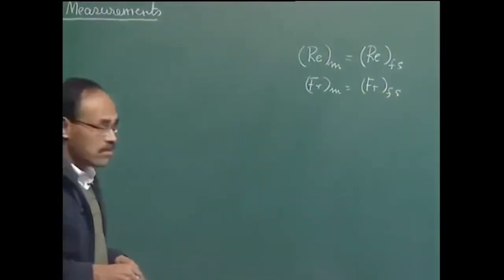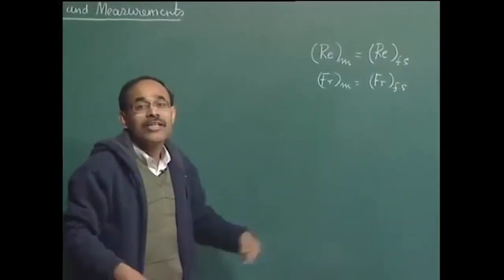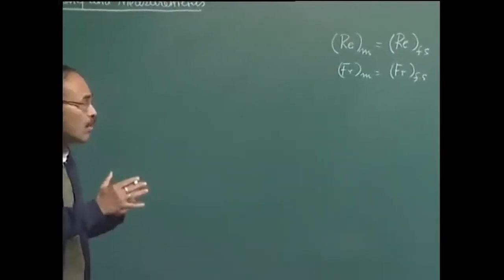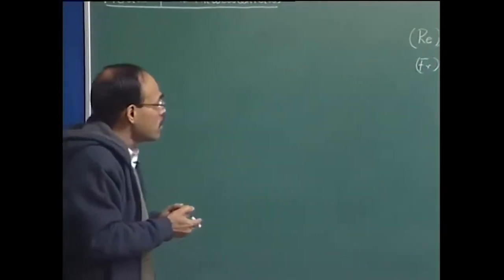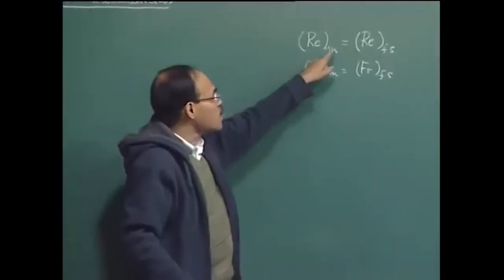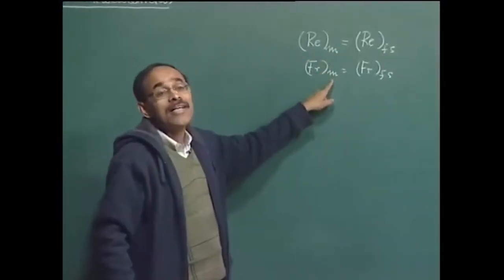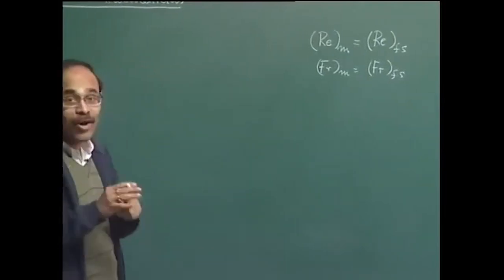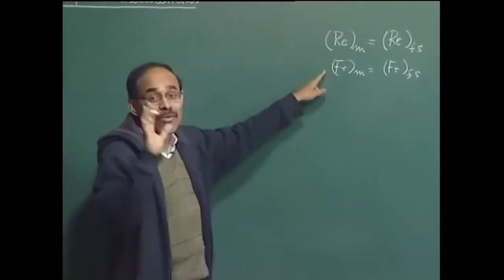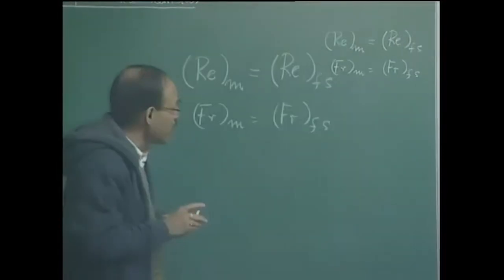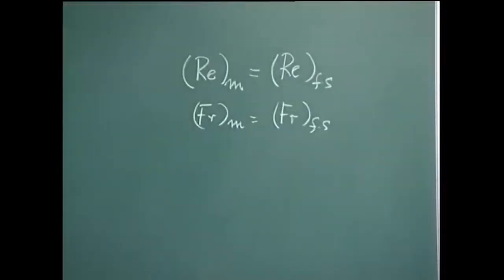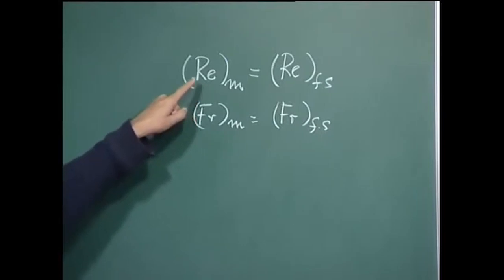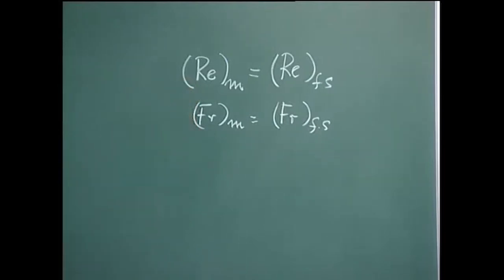If you can maintain these two equalities, additional numbers are going to follow if you have more forces, as I have already discussed. If you can maintain these two equalities, we can say the systems are dynamically similar. Of course, before we can do this, we have to respect geometrical similarity. So geometrical similarity plus satisfying Reynolds similarity as well as Froude similarity will ensure that the two systems are dynamically similar.